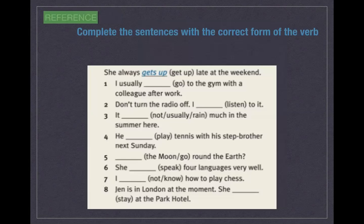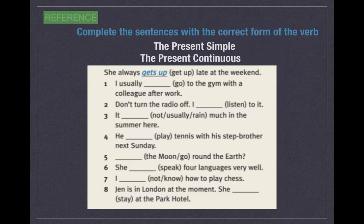Now complete the sentences with the correct form of the verb — either present simple or the present continuous. For example: 'She always gets up late at the weekend.' Please stop the video and do the exercise.